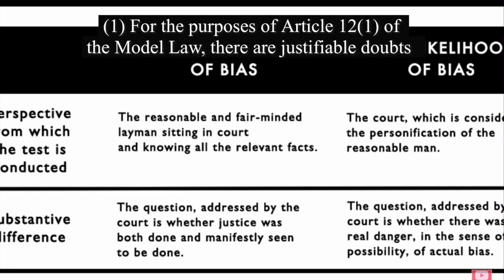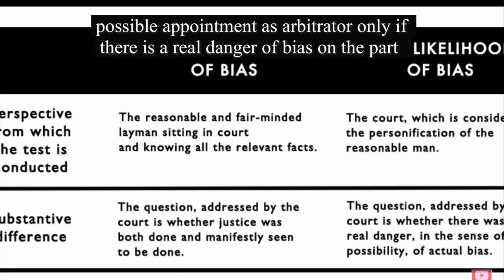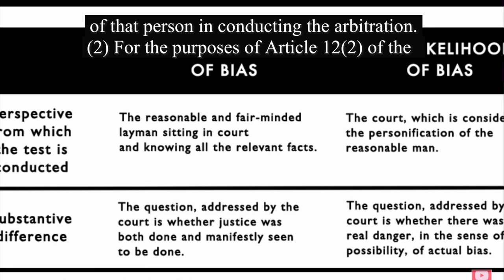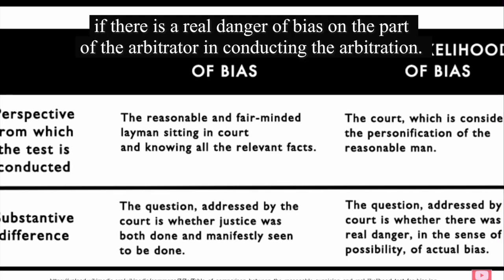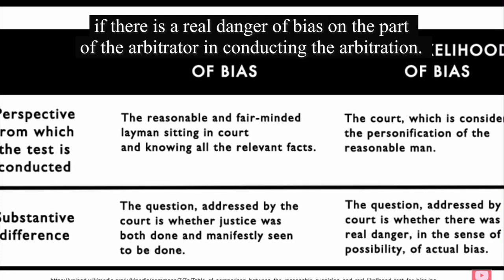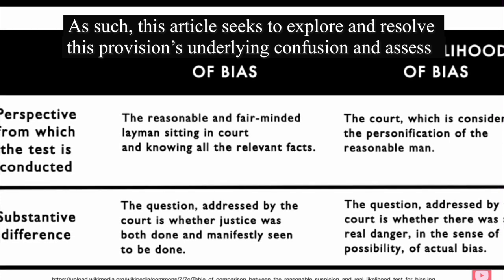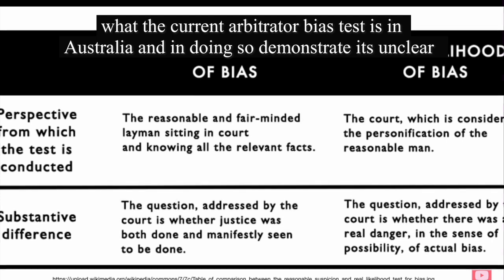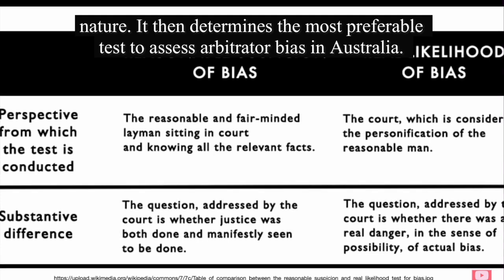For the purposes of Article 12(1) of the model law, there are justifiable doubts as to the impartiality or independence of a person approached in connection with a possible appointment as arbitrator only if there is a real danger of bias on the part of that person in conducting the arbitration. As such, this article seeks to explore and resolve this provision's underlying confusion and assess what the current arbitrator bias test is in Australia, and in doing so demonstrate its unclear nature. It then determines the most preferable test to assess arbitrator bias in Australia.